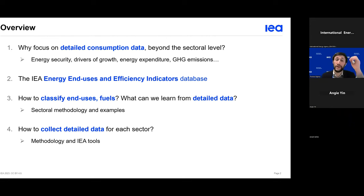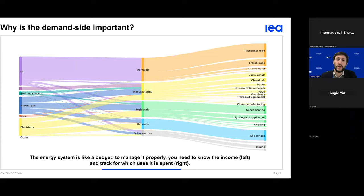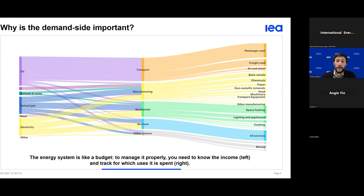Let's start with why we need to look at the demand side of the energy system beyond the sectoral level. First, as for a budget, the energy system is a complex set of intertwined flows — we have incoming energy flows on the left like revenues in a budget and outgoing flows on the right like expenditure. To manage a budget you need to study both the input and the output, so here we'll need to look at the details of how we consume energy.